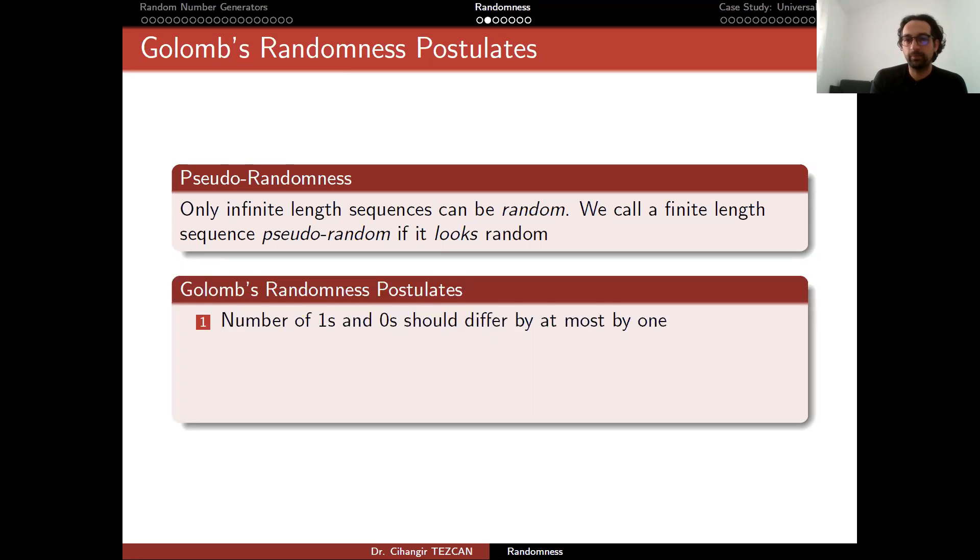The first postulate says that number of ones and zeros should differ by at most by one. This means that since it is a uniform distribution, the probability of getting a zero or one is one over two. So the idea is that if you have an infinite length zeros and ones, half of them must be zero and half of them must be one. But since we are talking about infinity, in the finite case, what we are expecting to see is that half of them to be zero or one.